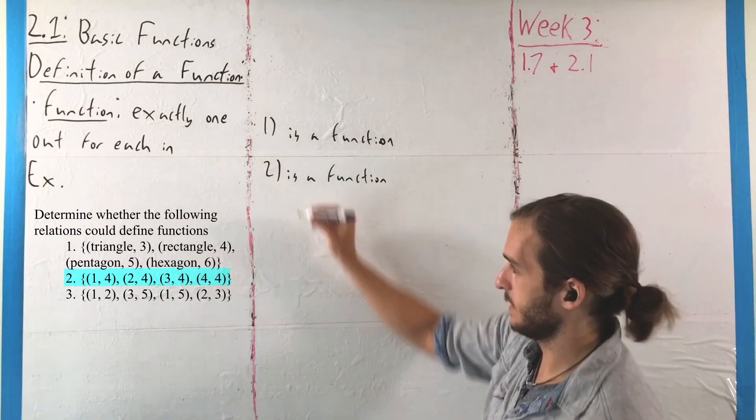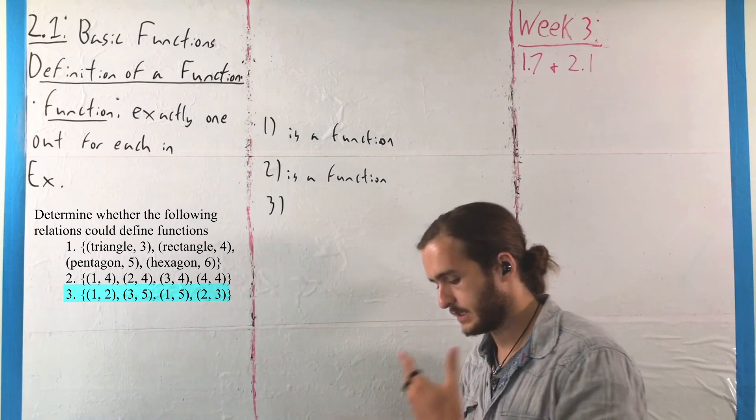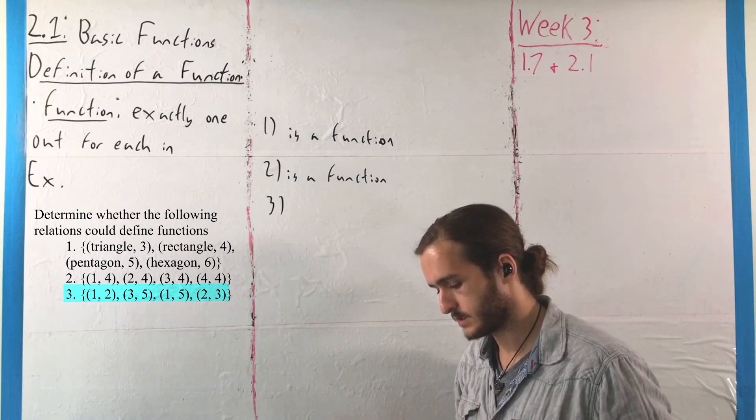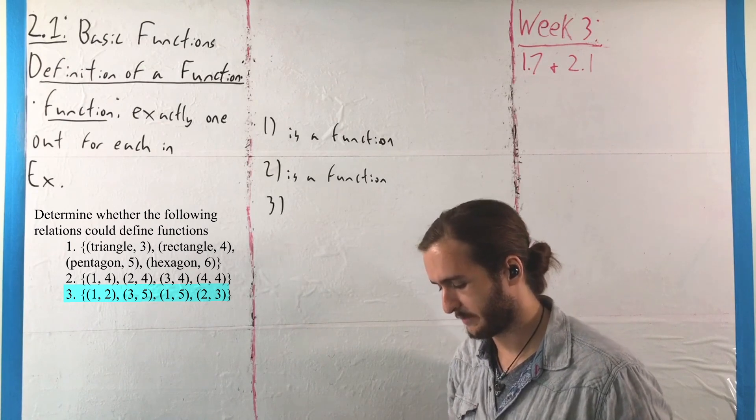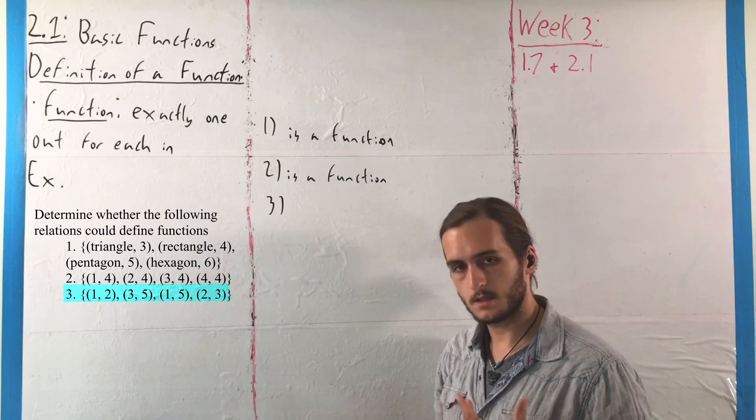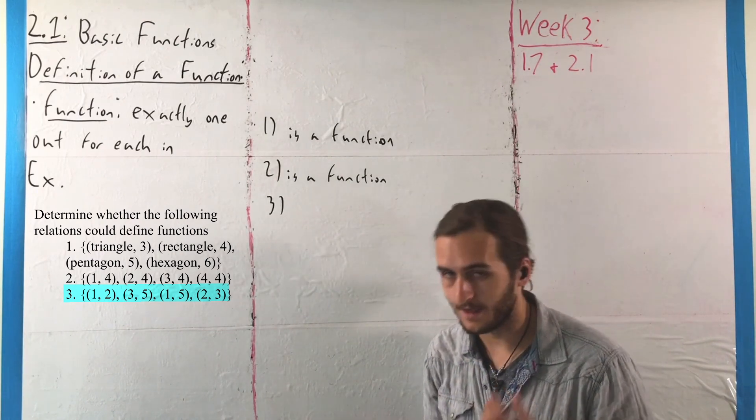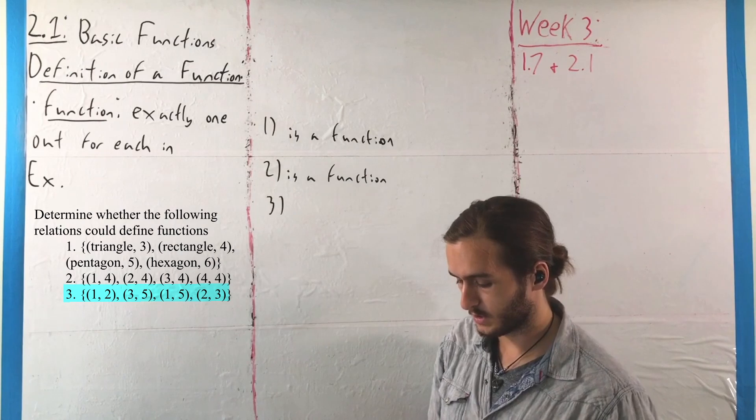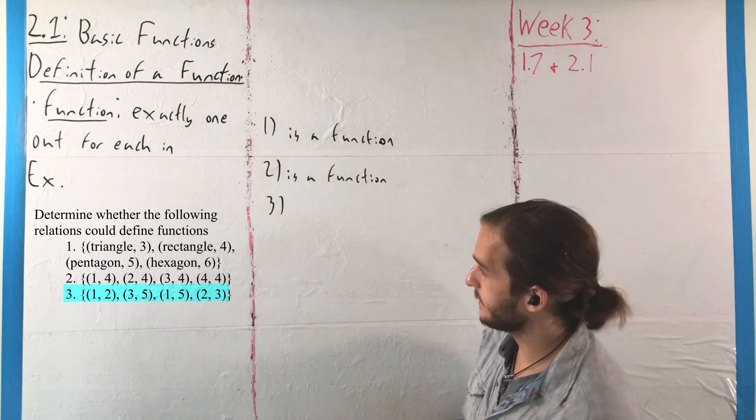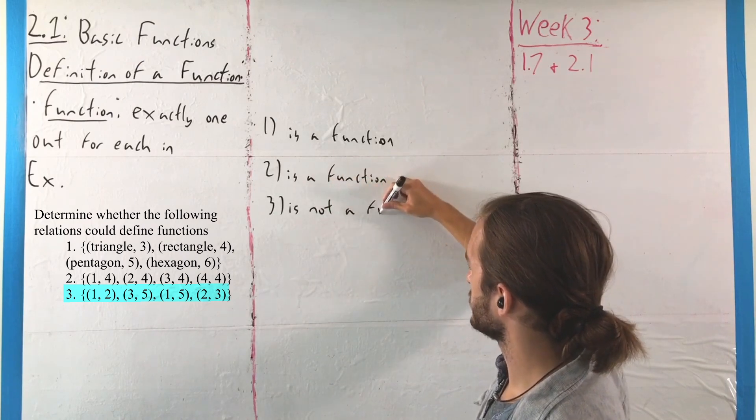Then finally, for our third case, we can see there that even though each of the things in the output is, well, they're not all unique, actually. There's the 1-3-5 and a 3-5, but more importantly, because the element 1 in the domain, on that first coordinate, the left part there, is supposed to go to both 2 and 5, this is not a function.